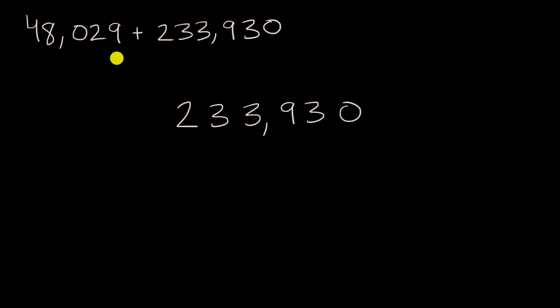So I'm gonna write the ones place in the same column as the ones place on the top number. So this is the 10,000th place, so 48,029. So nine ones, zero ones, two tens, three tens, so on and so forth. And now I am ready to add.